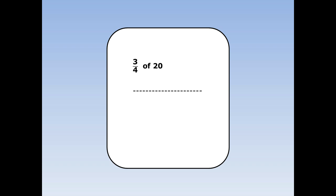What's 3 quarters of 20? To find 3 quarters of something, I need to divide by 4 and times by 3. 20 divided by 4 is 5. 5 times 3 is 15.